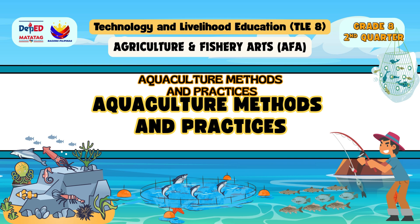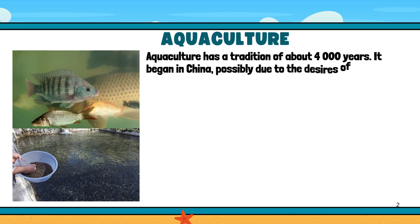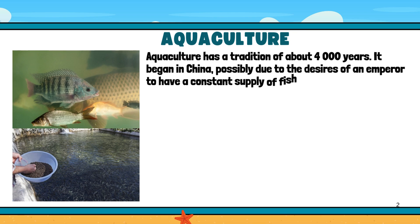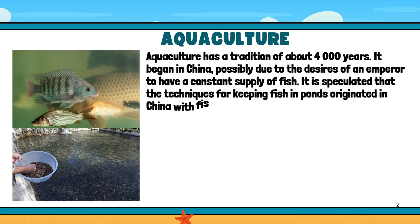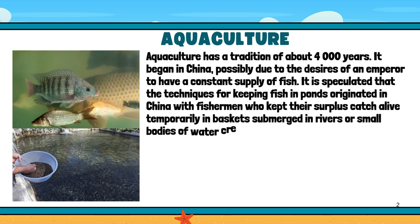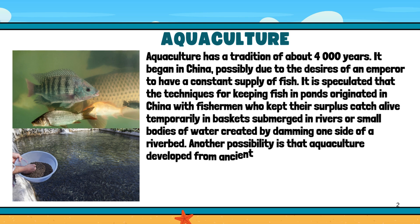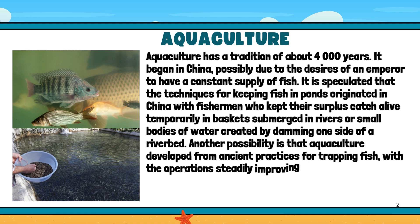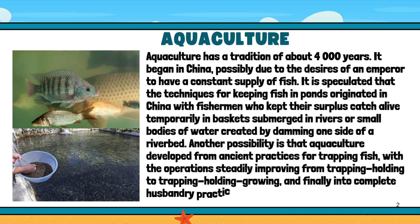TLE 8, Quarter 2, Lesson 3-24, Week 4: Aquaculture. Aquaculture has a tradition of about 4,000 years. It began in China, possibly due to the desires of an emperor to have a constant supply of fish. It is speculated that the techniques for keeping fish in ponds originated in China with fishermen who kept their surplus catch alive temporarily in baskets submerged in rivers or small bodies of water created by damming one side of a riverbed. Another possibility is that aquaculture developed from ancient practices for trapping fish, with the operation steadily improving from trapping and holding, to trapping, holding, and growing, and finally into complete husbandry practices.